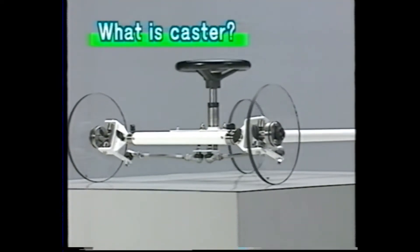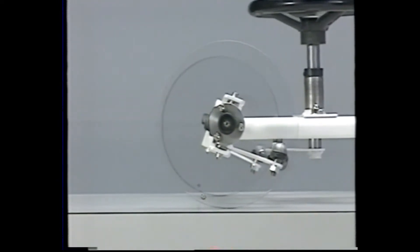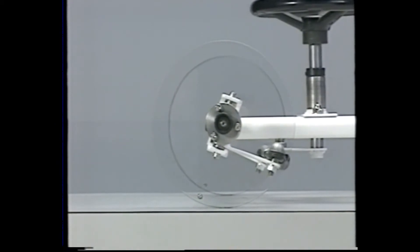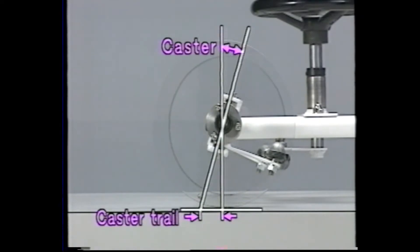Caster refers to the tilting angle of the steering axis viewed from the side, shown as the angle from the plumb line. A backward leaning is called positive caster; hardly any vehicles feature negative caster. For positive caster, the point at which the steering axis centerline intersects the ground is more forward than the center at which the tire makes contact with the road surface. The distance between these two points is called the caster trail.